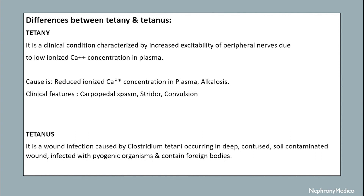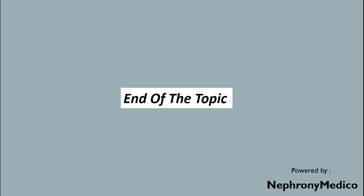Differences between tetany and tetanus: tetany is a clinical condition characterized by increased excitability of peripheral nerves due to low ionized calcium concentration in plasma, caused by reduced ionized calcium or alkalosis, with clinical features including carpopedal spasm, stridor, and convulsions. Tetanus, by contrast, is a wound infection caused by Clostridium tetani occurring in deep, contused, soil-contaminated wounds infected with pyogenic organisms and containing foreign bodies.